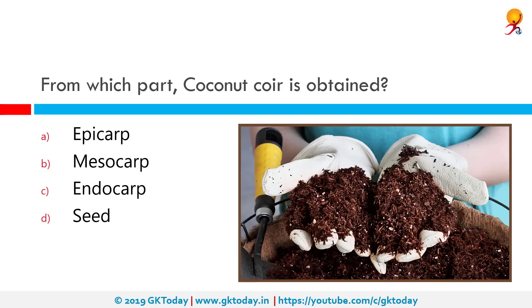From which part is coconut coir obtained? It is obtained from the mesocarp. Coconut coir, or coconut fiber, is a natural fiber extracted from the husk of coconut and used in products such as floor mats, door mats, brushes, and mattresses. Coir is the fibrous material found between the hard internal shell and the outer coat of a coconut.